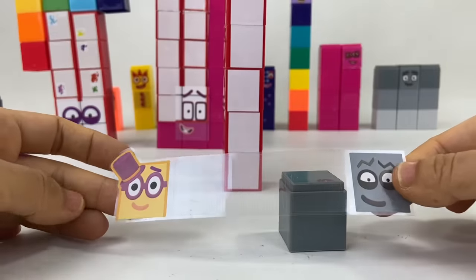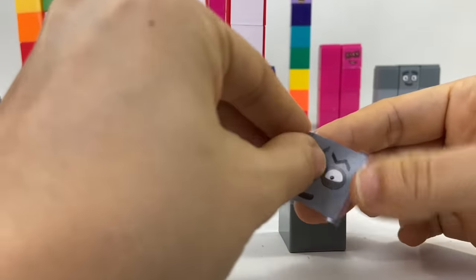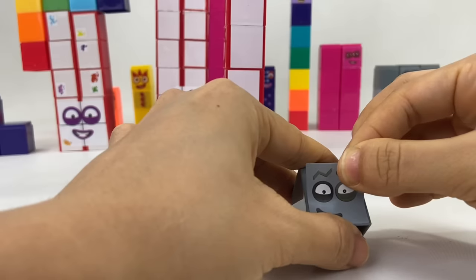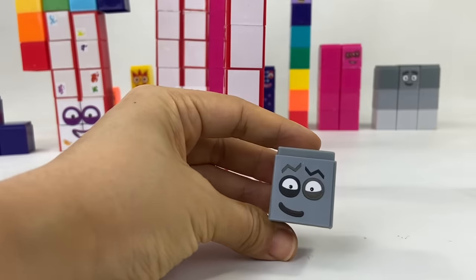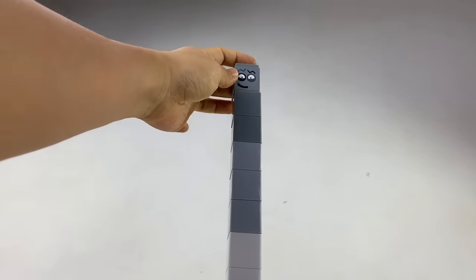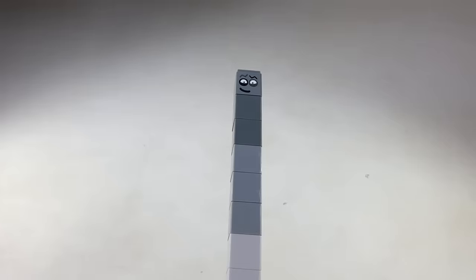Number block 19 loves to make crazy shapes. She's made up of 10 white blocks and 9 gray blocks. She can't quite make rectangles, but she doesn't mind. And she has a magic pencil that can draw on top of whatever shape she makes. There you go. Number block 19.